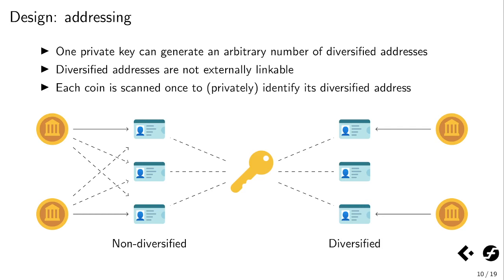The idea behind addressing is interesting. What we want is called diversified addressing — similar approaches are used in projects like Zcash and Monero. The idea is that one private key should be able to generate an arbitrary number of diversified addresses that are not externally linkable. Unlike some previous approaches, where with non-diversified addresses you have to scan each coin for each address — which scales very poorly — with diversified addressing you only have to scan each incoming coin once. You can deterministically and uniquely identify which diversified address it's destined for. So this scales much better, and that's what Spark uses.